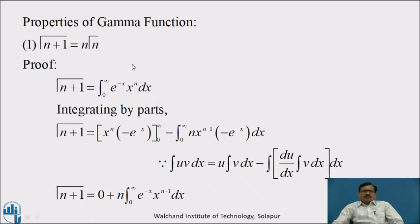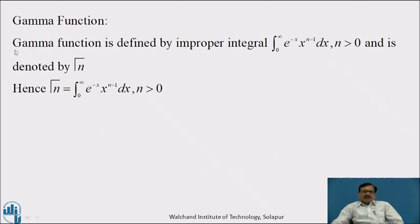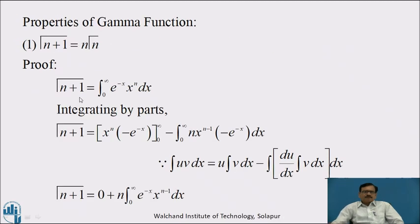Now we will see the properties of the Gamma Function. The first important property is: Γ(n+1) = n · Γ(n). We will prove this property using the definition of the Gamma Function. Replacing n by n+1 in the definition, we get: Γ(n+1) = ∫₀^∞ e^(−x) · x^n dx.